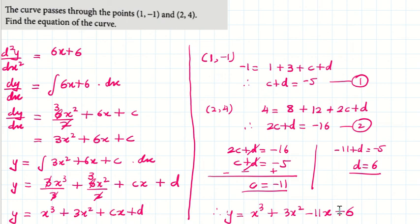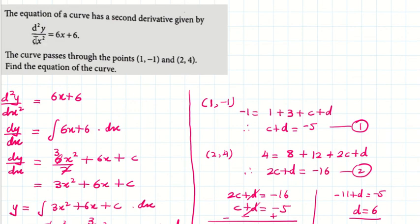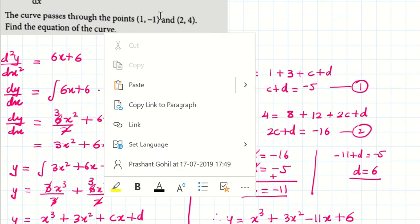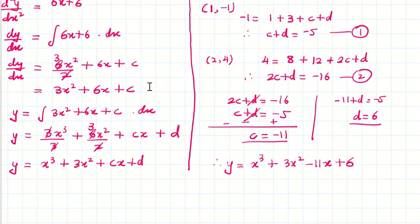Let me repeat what we did. We had the second order derivative. To find the original curve, I integrated it twice. The two sets of points which are given, I substituted them, got c and d, and put it back.